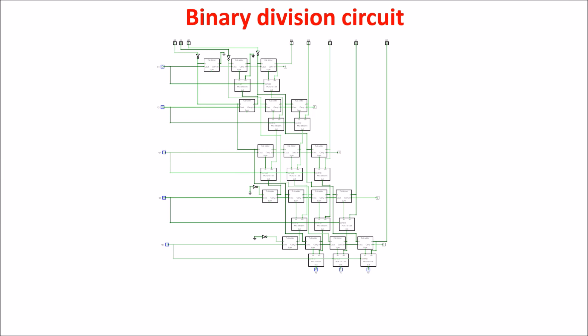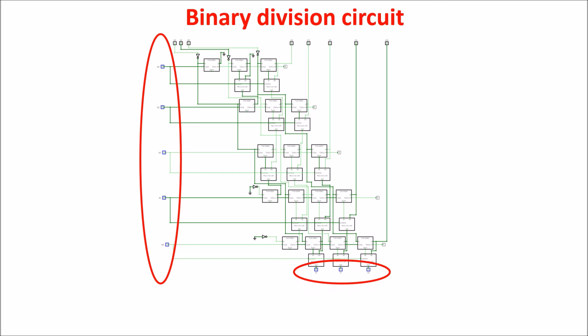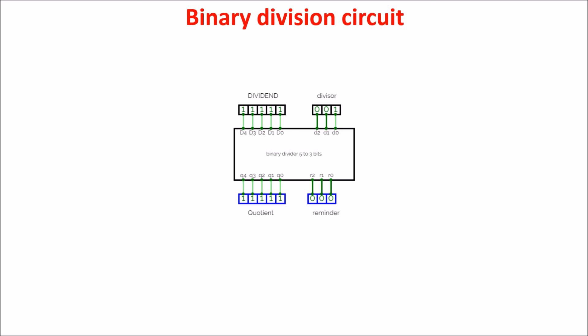Here we use CircuitVerse to simulate and design the circuit we analyzed. The 5-bit quotient has the same number of bits as the dividend, and the remainder has the same number of bits as the divisor. Putting everything in a box, we test some examples: if the divisor is 1, the quotient equals the dividend, as it should. 31 divided by 3 is 10 with remainder 1. If we divide by 0, the quotient and remainder have no meaning. And if the divisor is bigger than the dividend, the circuit correctly places the dividend in the remainder and keeps the quotient at 0.